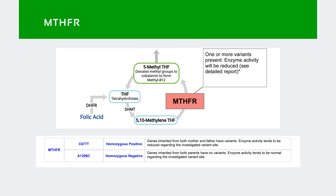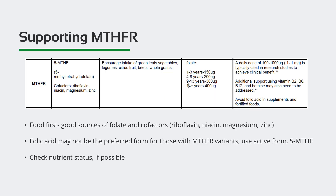With regard to the other variant, A1298C, this person was homozygous negative — meaning neither parent passed on variants. Although MTHFR variants are associated with a number of disorders, if not supported properly with nutrition and lifestyle, elevated homocysteine appears to be a significant link to many of those conditions.